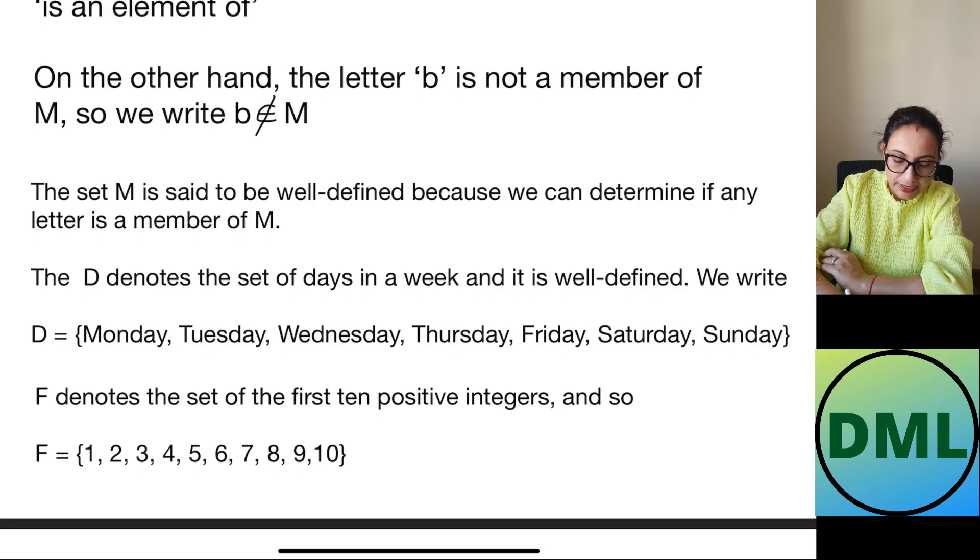Because days of the week are I can put it in the bracket form Monday, Tuesday, Wednesday, Thursday, Friday, Saturday, Sunday and bracket closed. As you can see from here all the elements are separated by commas and they have put inside the bracket and this set has been denoted by a capital letter D.